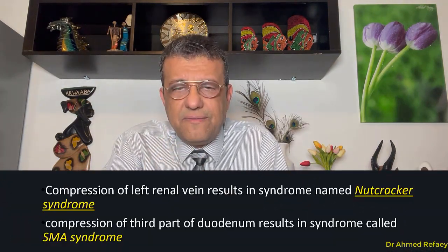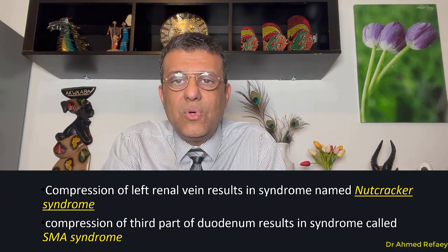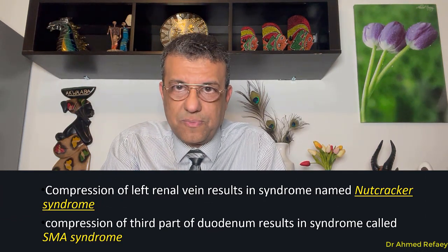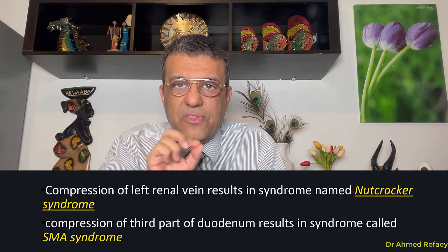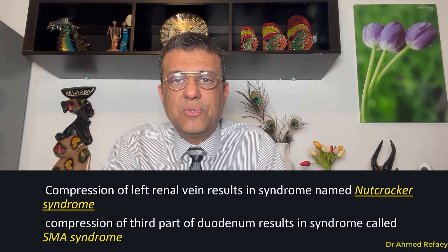Any condition resulting in a decrease of mesenteric fat will consequently decrease this angle. When the angle decreases to less than 22 degrees, it results in compression of either the left renal vein, the third part of the duodenum, or both. Compression of the left renal vein results in a syndrome known as Nutcracker Syndrome, and compression of the third part of the duodenum results in a syndrome known as Superior Mesenteric Artery Syndrome.